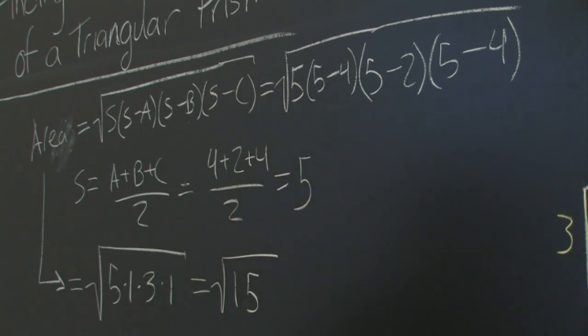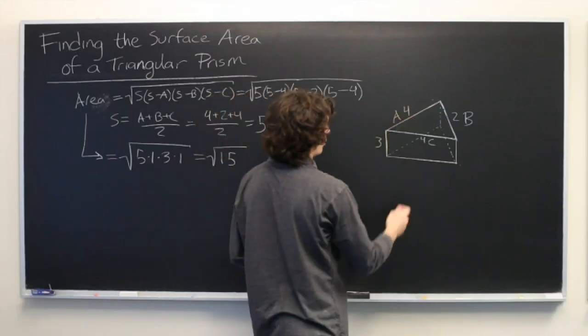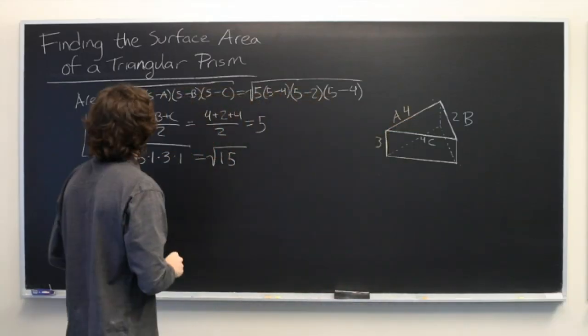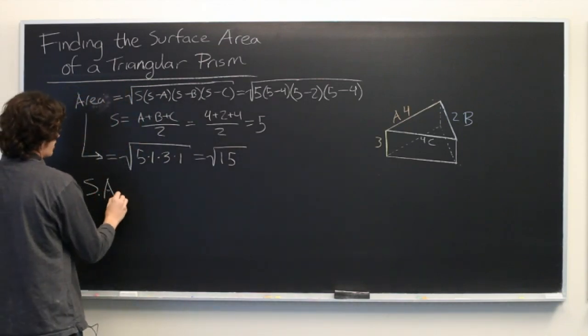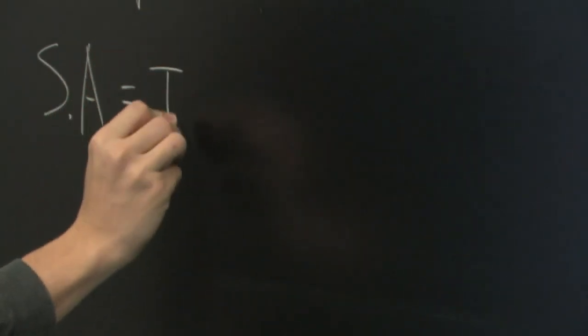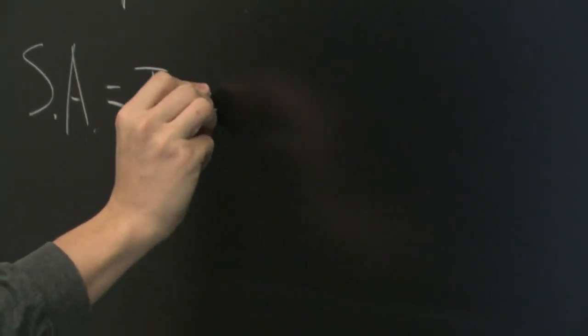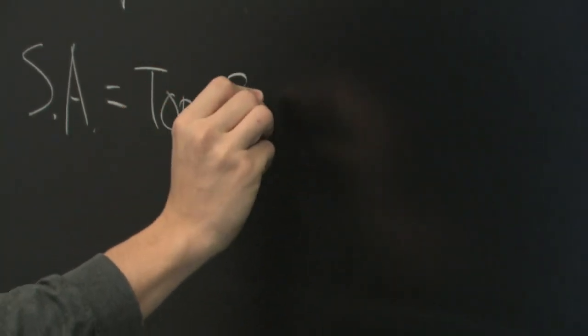So now we know the area of the top triangle and the bottom triangle. They're both square root of 15. So the total surface area, which we'll abbreviate with SA, is equal to the area of the top plus the area of the bottom, which we already know,